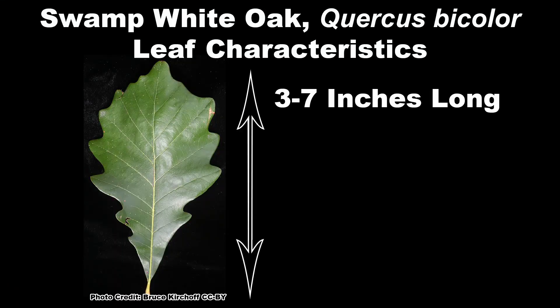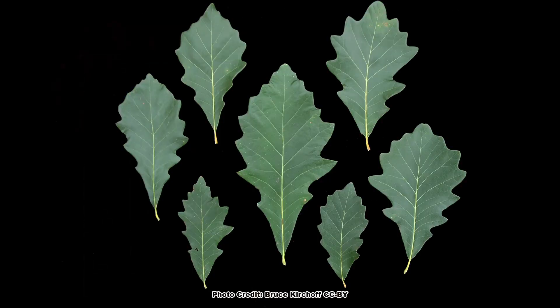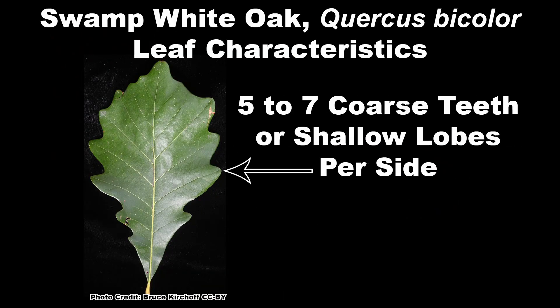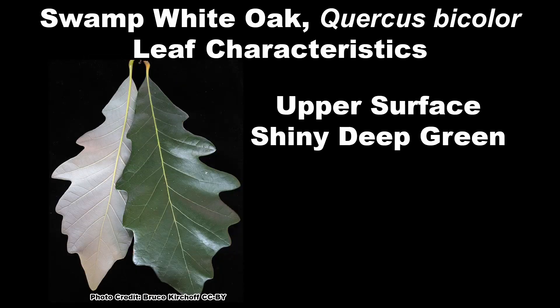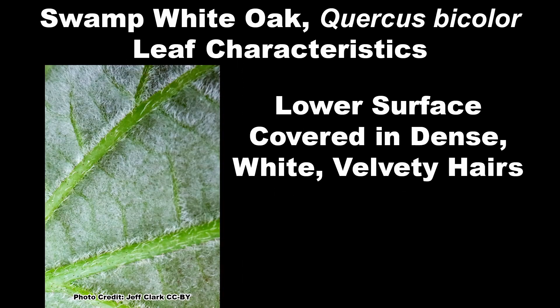Swamp white oak leaves are three to seven inches long by one and a quarter to four inches wide, oblong in shape, and tend not to vary much in their general shape. They are widest just past the middle towards the tip and will be either coarsely toothed or shallowly and regularly lobed with five to seven lobes per side. Each lobe or tooth will have a vein running to its tip. Leaves are shiny deep green above and bright whitish below, with the lower leaf surface covered in dense white velvety hairs.